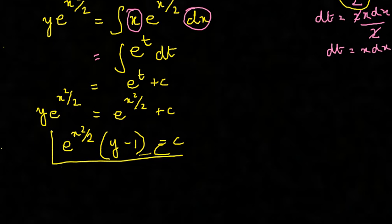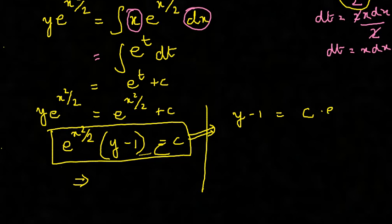You can leave it like this, or another way written in some textbooks - this becomes y minus 1 is equal to c into e power minus x squared by 2. Next would be y is equal to 1 plus c into e power minus x squared by 2.